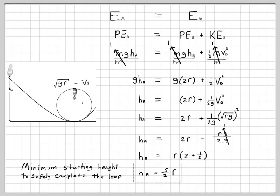And that's it, the minimum starting height, independent of mass, independent of time, independent of acceleration. I just need to start at a height that is two and a half times higher than the radius of the loop. So if I had a loop radius of 10 meters, I'd have to start up here at 25 meters. That would be my minimum height. What fun!